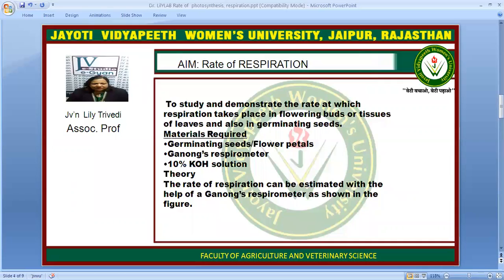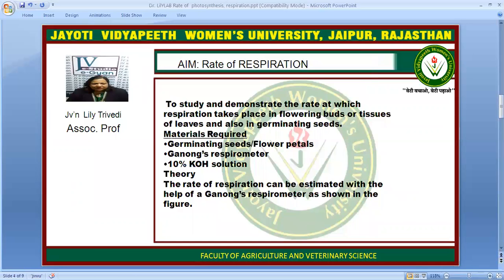The rate of respiration can be estimated with the help of Ganong's Respirometer. As you can see in the diagram, it is an apparatus which comprises three leveling parts of the tube. There is a bulb that terminates in 10% KOH solution, and the bulb has a stopper with a lateral hole in it. It is through this hole that the atmospheric connection is made through the stopper regulation.